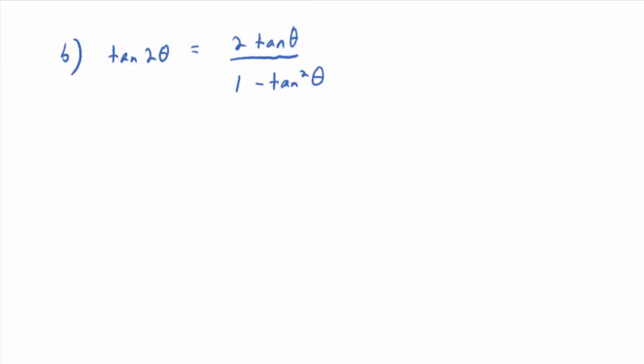Verify that tangent of 2 theta equals 2 tangent theta divided by 1 minus tangent squared theta. Start with the left-hand side. Split up 2 theta: tangent of 2 theta equals tangent of theta plus theta. Now we can apply the tangent sum identity.